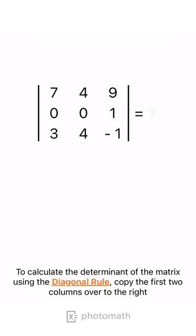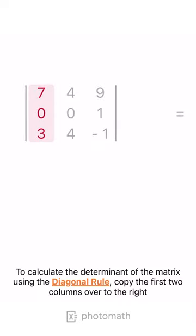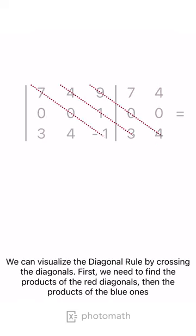To calculate the determinant of the matrix using the diagonal rule, copy the first two columns over to the right. We can visualize the diagonal rule by crossing the diagonals. First, we need to find the products of the red diagonals, then the products of the blue ones.